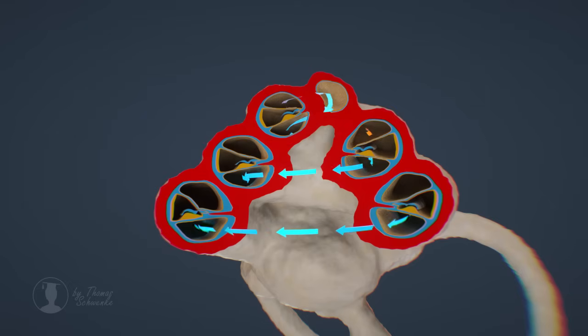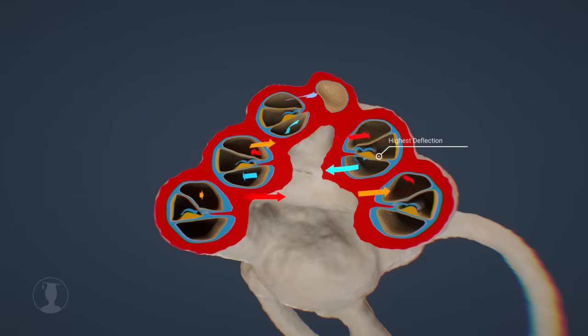With low tones, the stapes moves more slowly, which leads to resonance and thus to a high deflection at another point on the basilar membrane. This enables us to differentiate between frequencies, as different frequencies cause very specific points on the basilar membrane to move strongly.